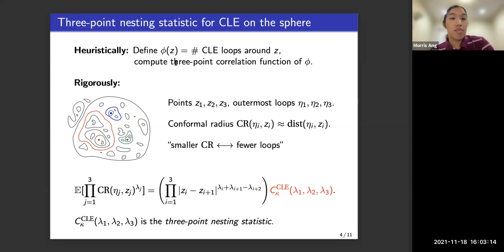And this doesn't make rigorous sense because phi is going to be infinite almost everywhere. So instead what we can do is as follows. We fix three points, and for each point, I look at the outermost loop that separates this point from the other two points. So this red loop surrounding the red point is the outermost loop separating it from the blue and green point.